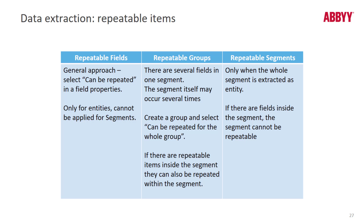We've talked about segments and entities, but we also need to think about when an entity repeats itself. For instance, maybe there are several organizations in a segment — that would be a repeatable item. Or the segment itself may occur several times. If the segment itself is going to be repeated, you need to extract the entire segment. The approach is to create a group field and select 'can be repeated' for the whole group. This is covered in a task so you can get hands-on experience with repeatable items.